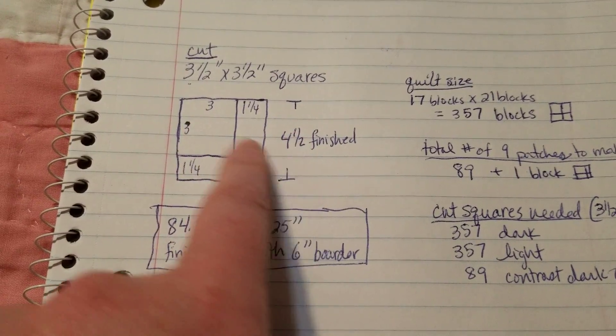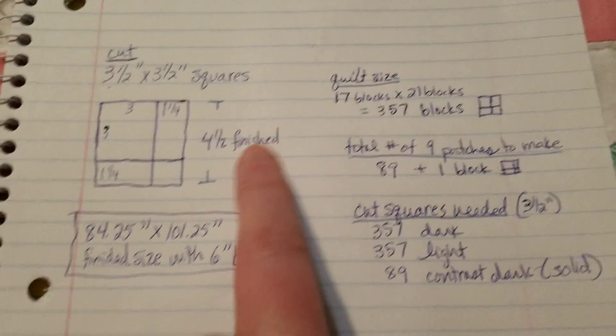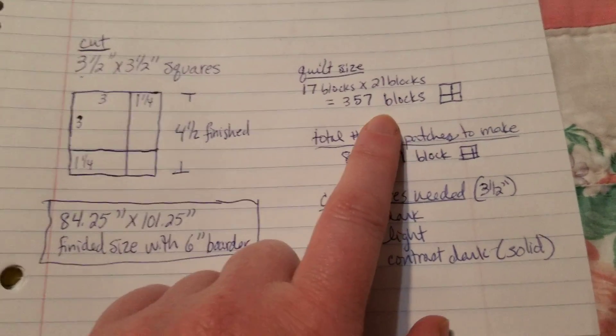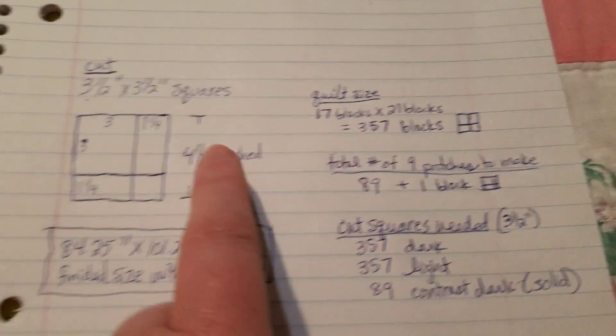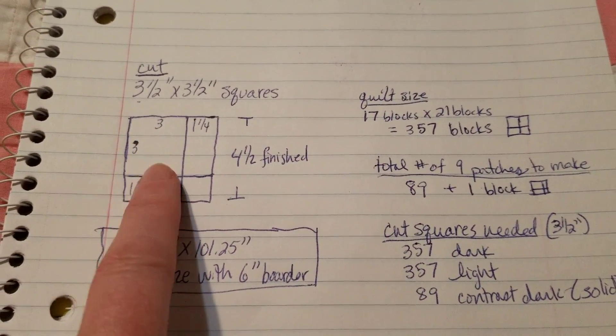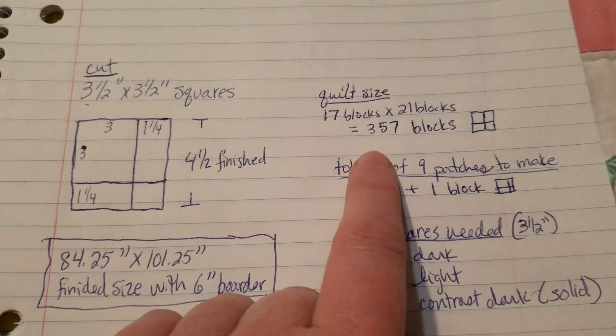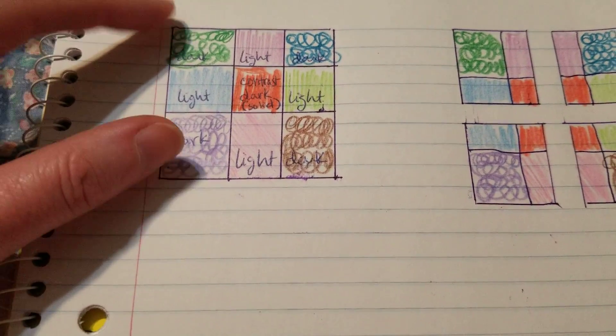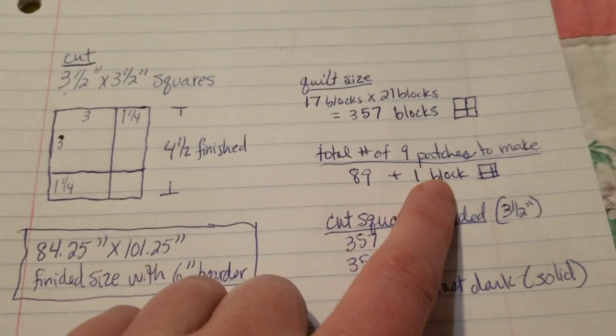Because I've got four and a half inch squares right here, to get to a queen size I figure it's going to have to be 17 blocks by 21 blocks, which comes out to be 357 of these little blocks that I'm going to have to make. Divide that by four, because each one of the nine patches makes four of them—that's a total of 89 nine patches I need to make, plus I need one extra block.